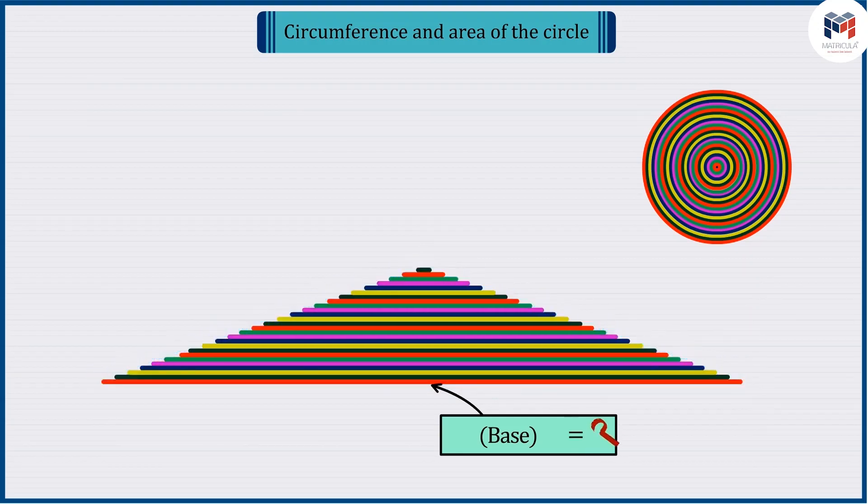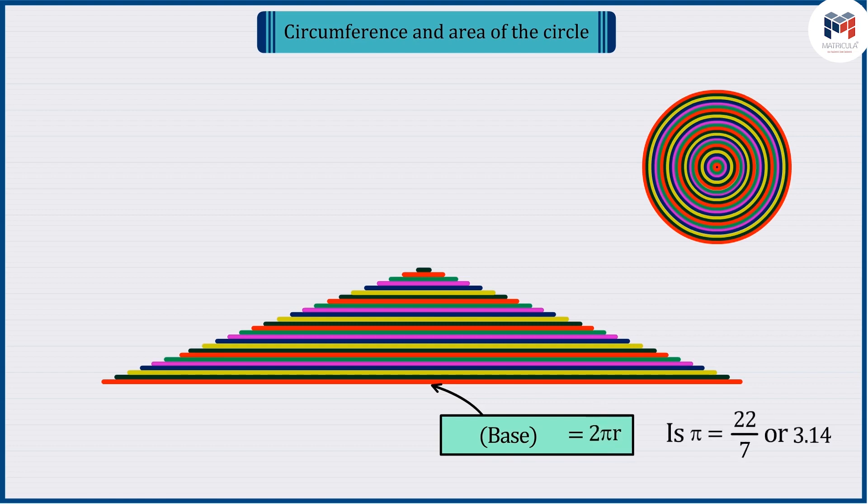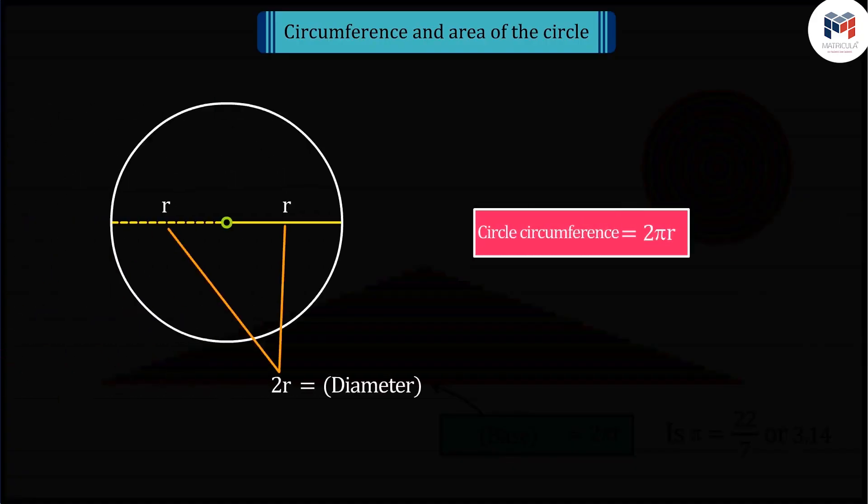Can you tell what will be the length of the base of this shape? Absolutely correct. Its length will be 2 pi r because it is a line made of the outer circle, which is what we call as the perimeter of the circle. But can you tell the value of circumference of a circle, how 2 pi r is determined?